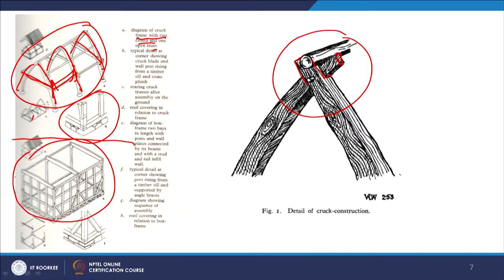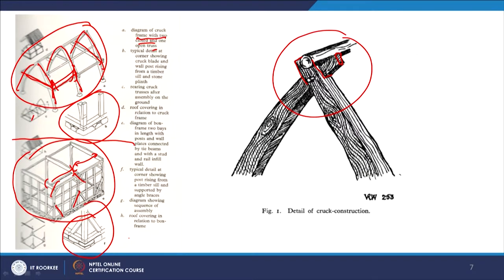In box-type frame construction, you can see two bays in length, wall plates connected with tie beams, and cross bracings which hold these frames — a technique very common across regions. This particular technique can even be found in Mediterranean countries; I was in Cyprus and found similar constructions there, with the intermediate spaces filled with insulation materials. You can see how the corner rises with similar techniques and how it frames on either side.